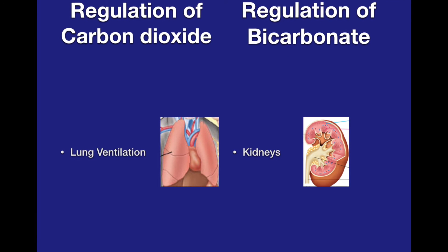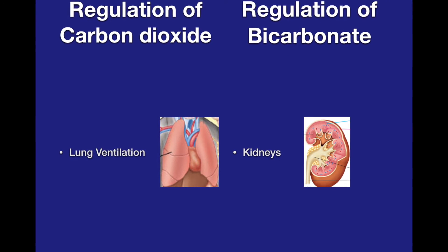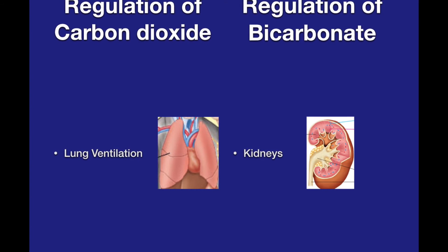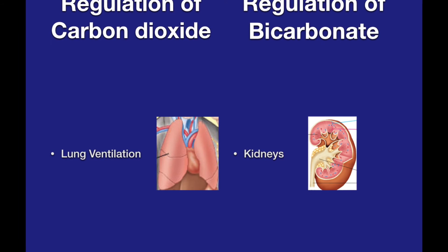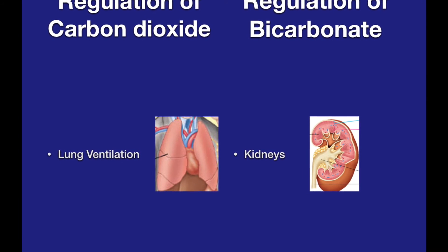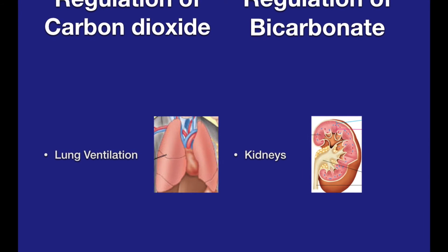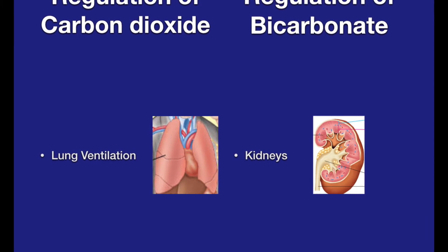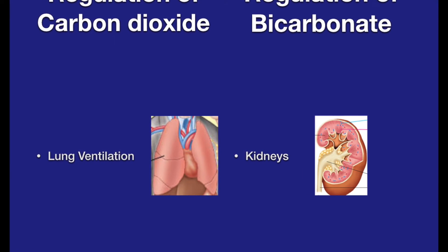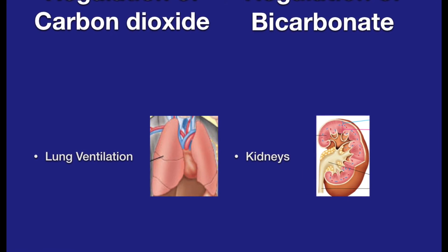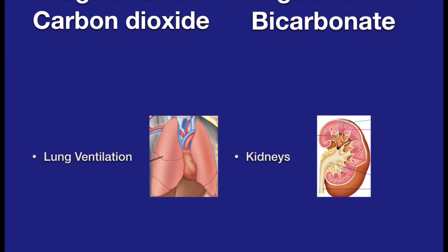The primary regulator of carbon dioxide gas in the arterial blood is lung ventilation, whereas the kidneys are the primary regulators of arterial blood bicarbonate concentration.